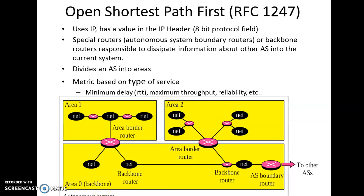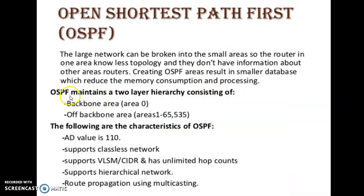An important point to note: if area 1 wants to communicate with area 2, there is no direct router connection between them. Any details must be passed through the backbone area, which is why it is called the primary area. OSPF maintains a two-layer hierarchy — the backbone area is numbered area 0, while all other areas range up to 65,535.